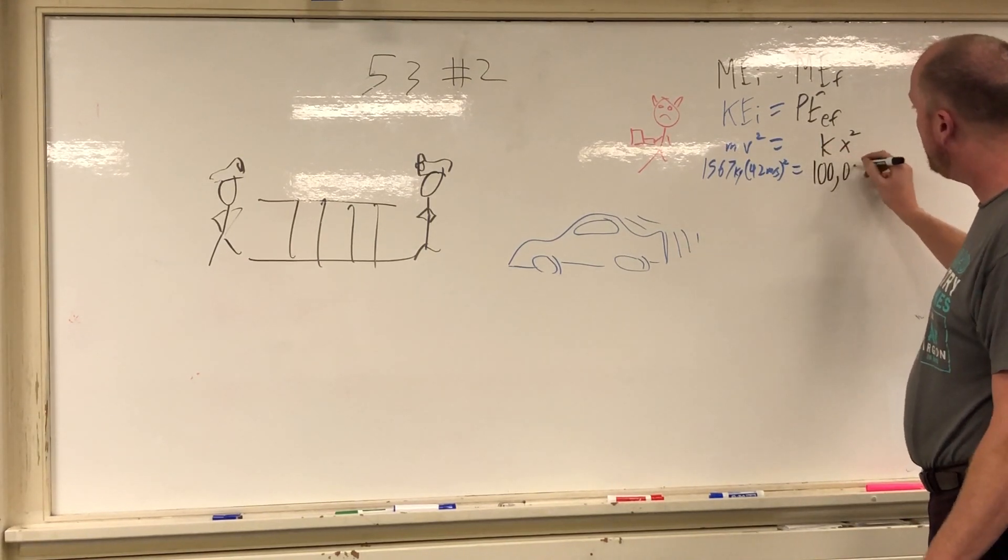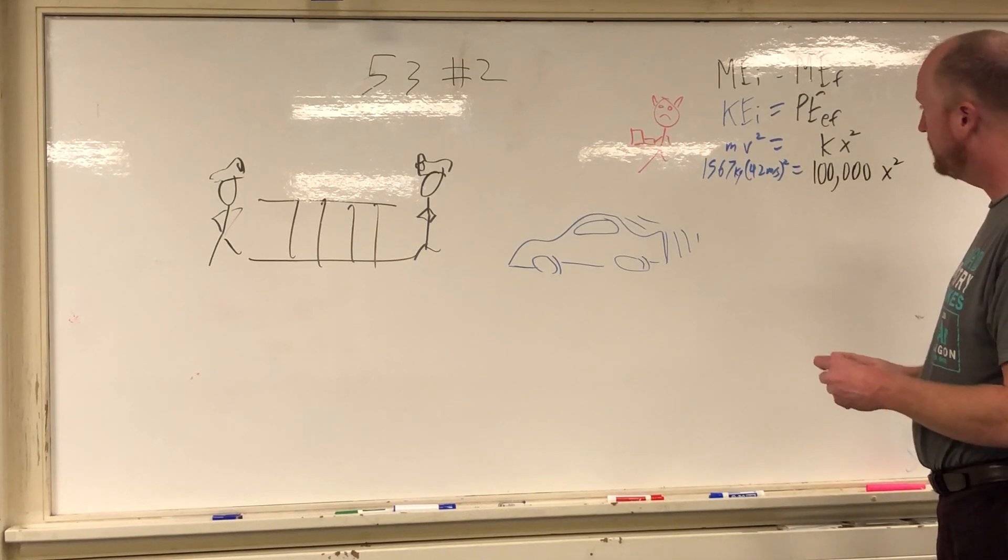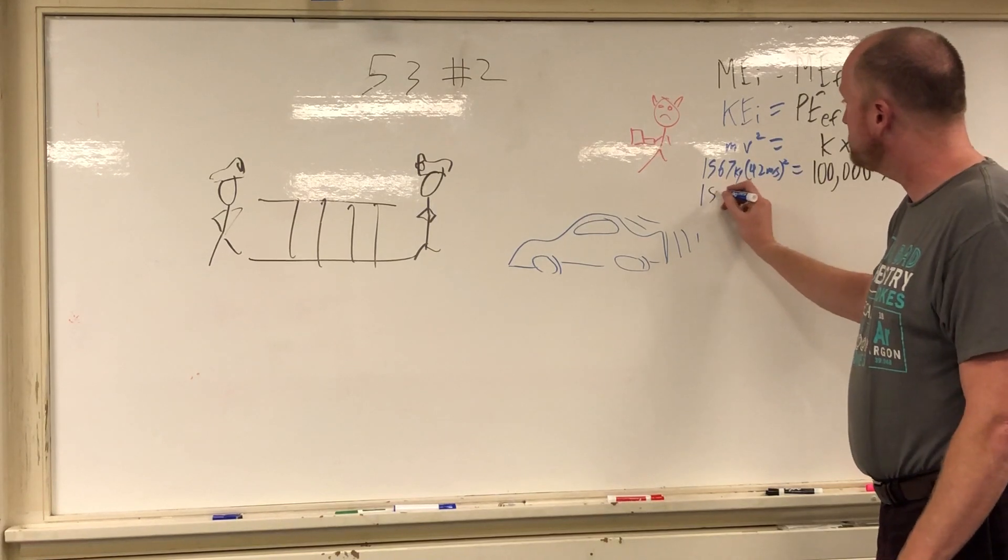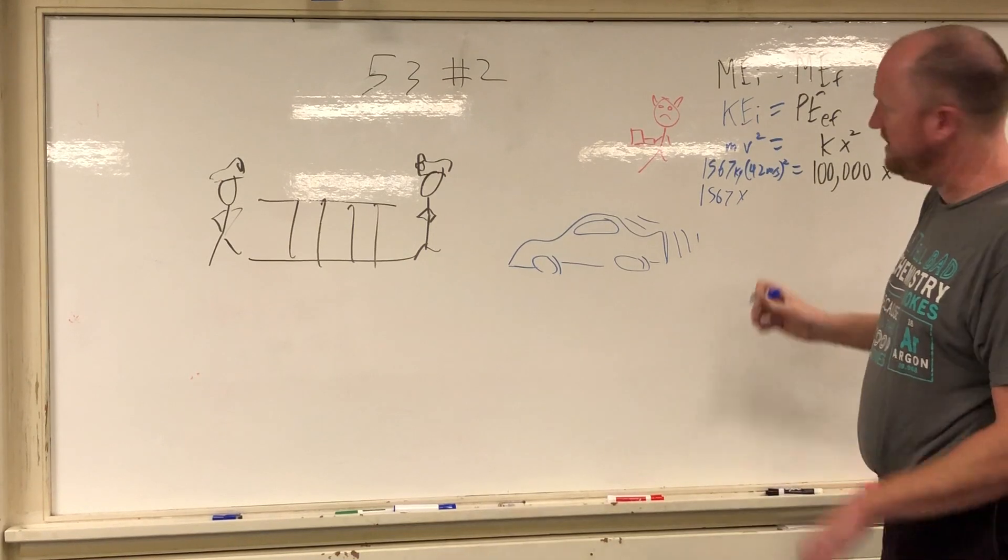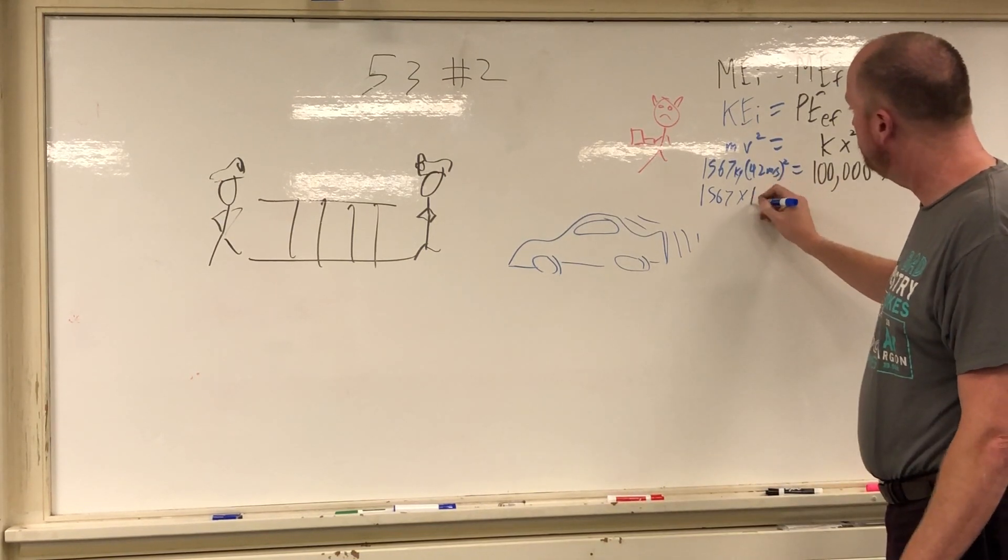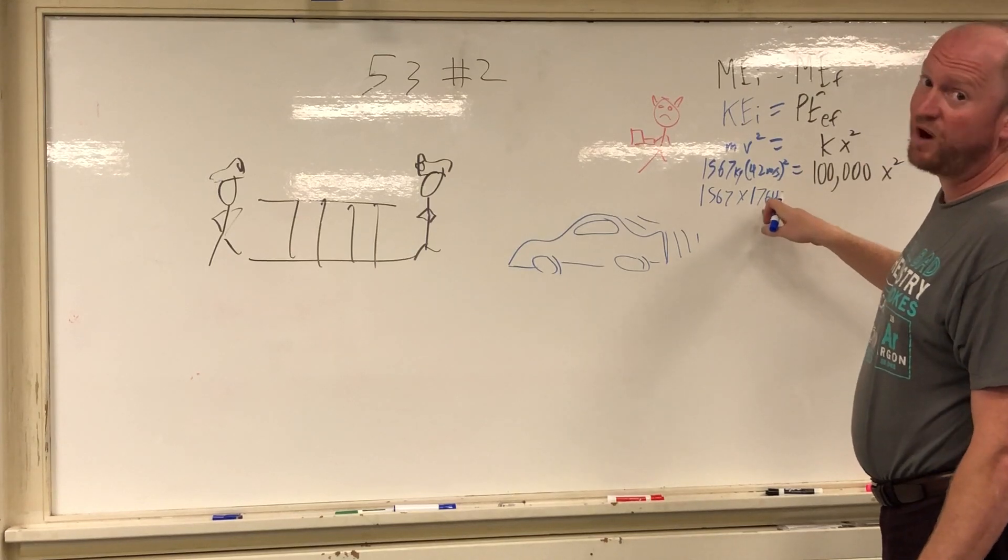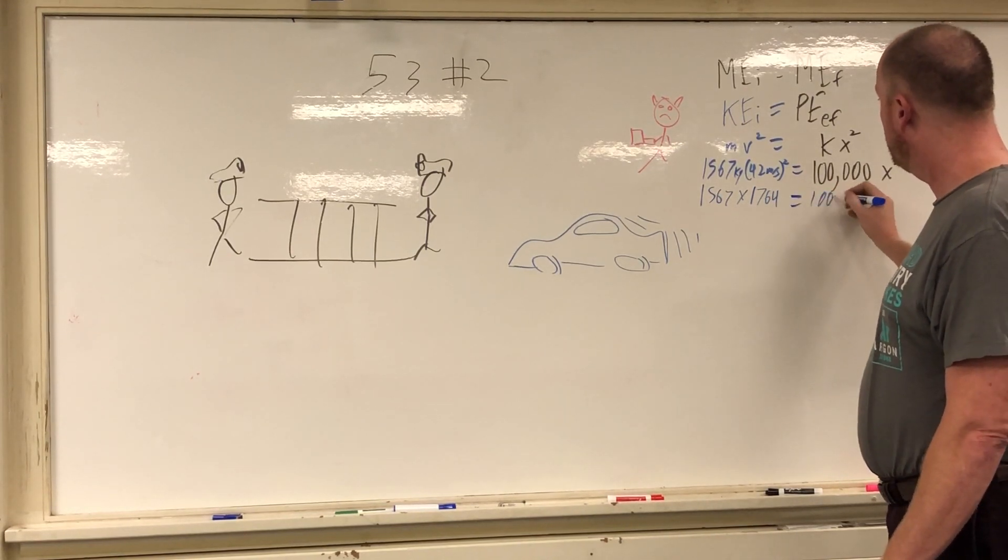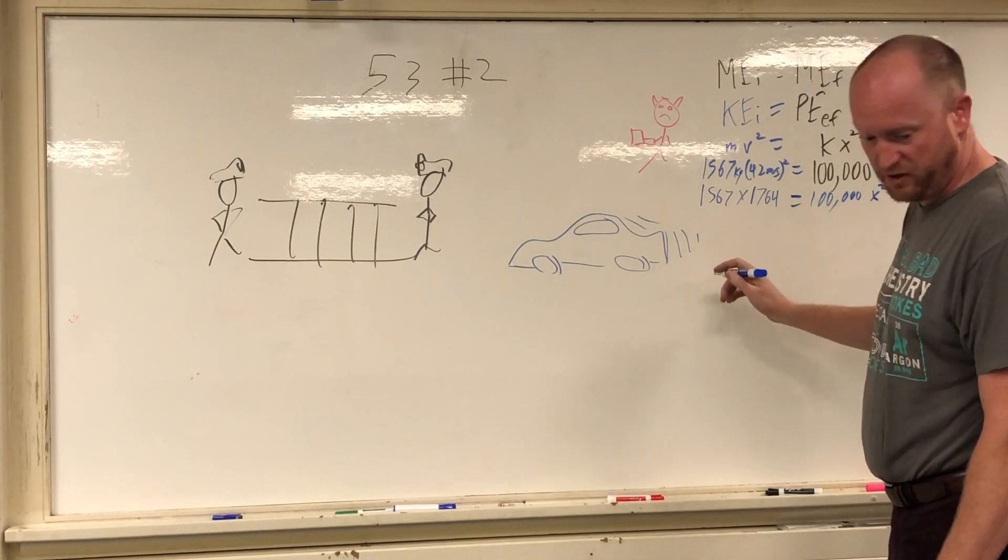No matter what your car size is though, the k on the net is going to be the same, so it's 100,000 x squared. Now just doing a little math here, my car's mass times 42 squared comes in at 1764. Again, your number's probably going to be bigger because your car is probably faster. It's equal to 100,000 x squared.